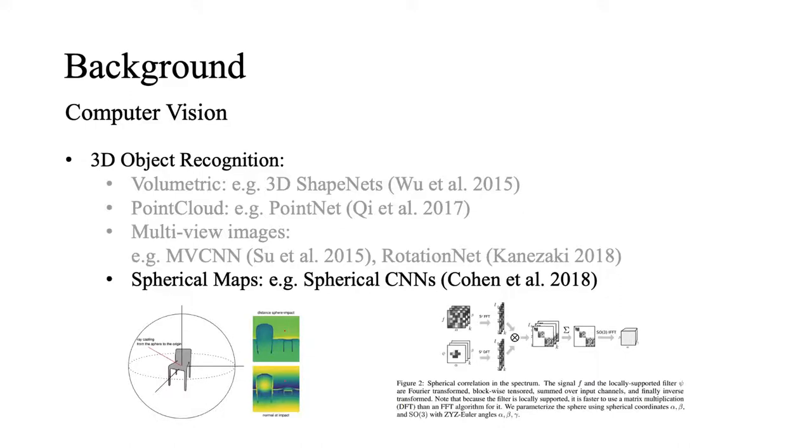Spherical maps have also been explored as a 3D representation. Spherical CNNs first obtain a spherical map by shooting rays from the surface of the sphere to the surface of the object, which offers a distance value for a point on the corresponding spherical coordinate. Then it uses convolutions directly on a spherical harmonic domain, which keeps 3D rotation equivalence of the spherical signals. Empirically, it demonstrates a certain level of rotation invariant properties as well.